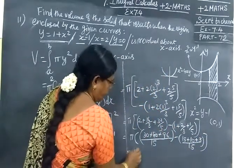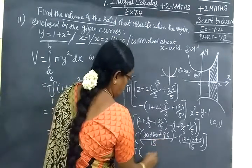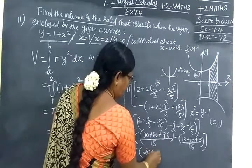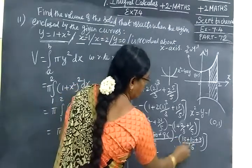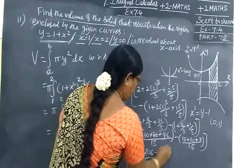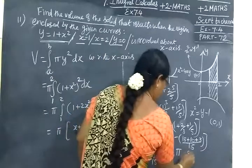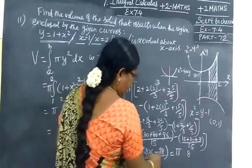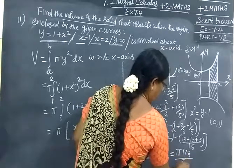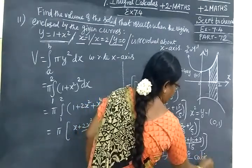Equal to π[(30 + 80 + 96)/15 - (15 + 10 + 3)/15] = π[(206 - 28)/15] = π[178/15] cubic units. This is the answer: 178π/15 cubic units.